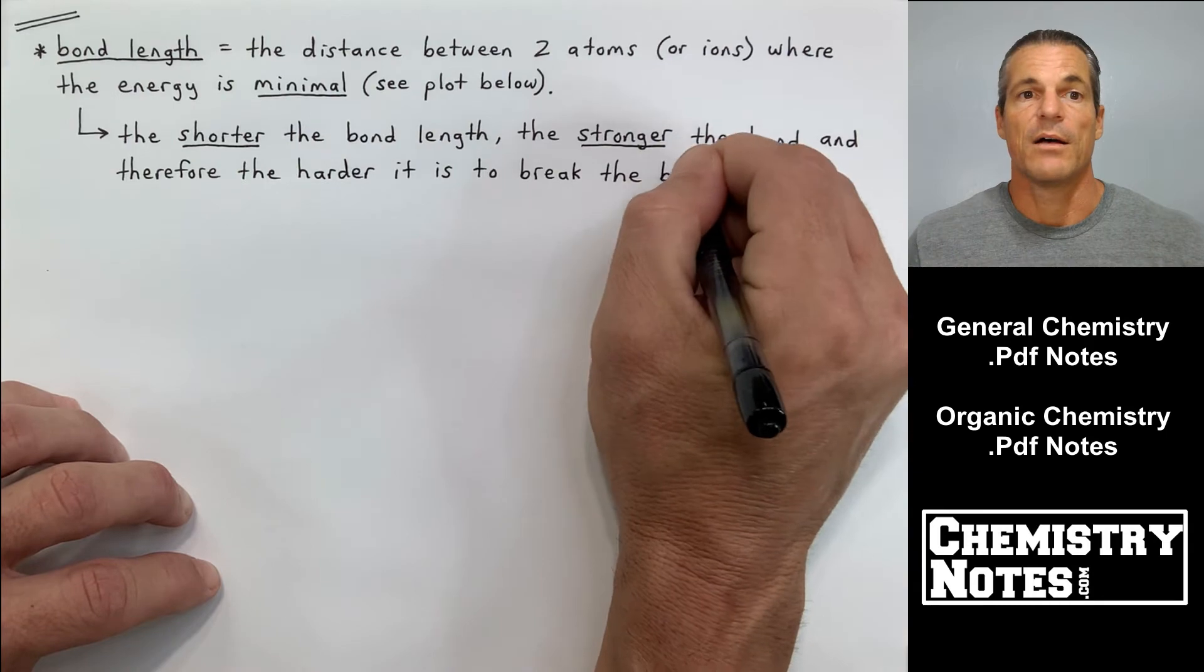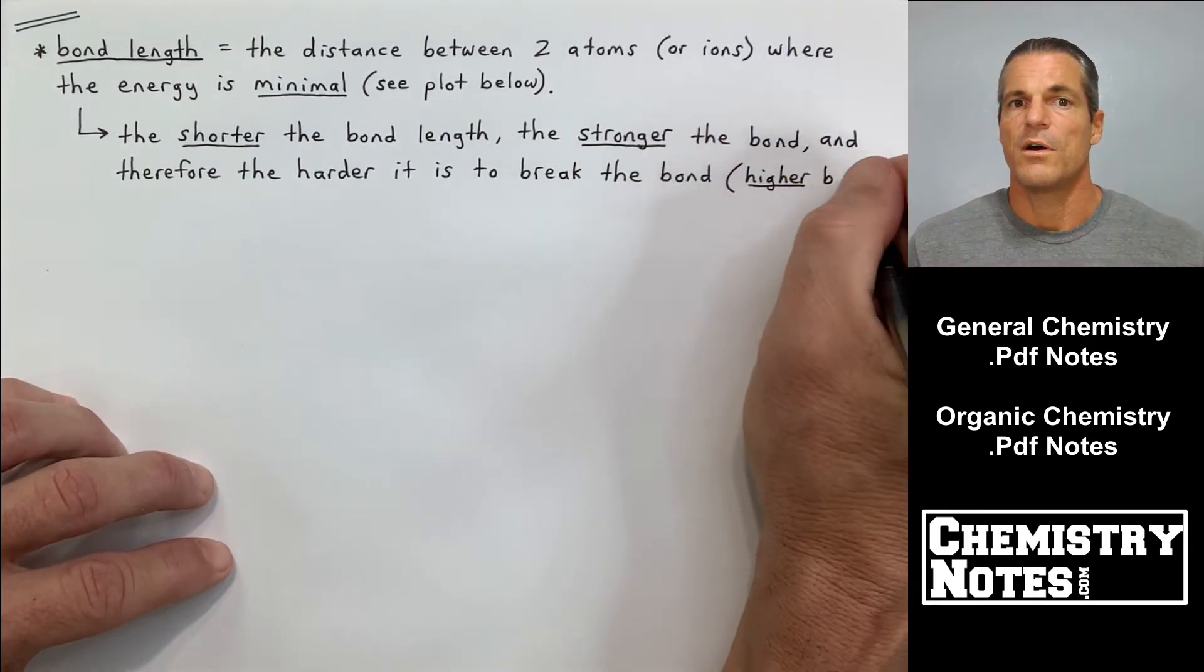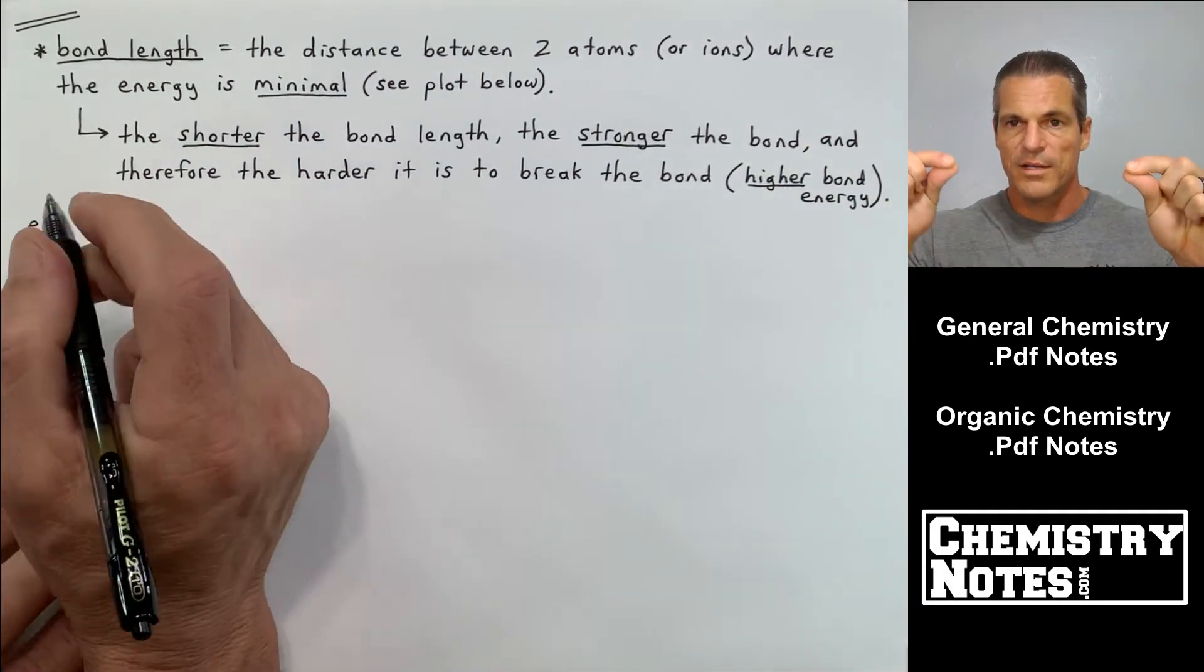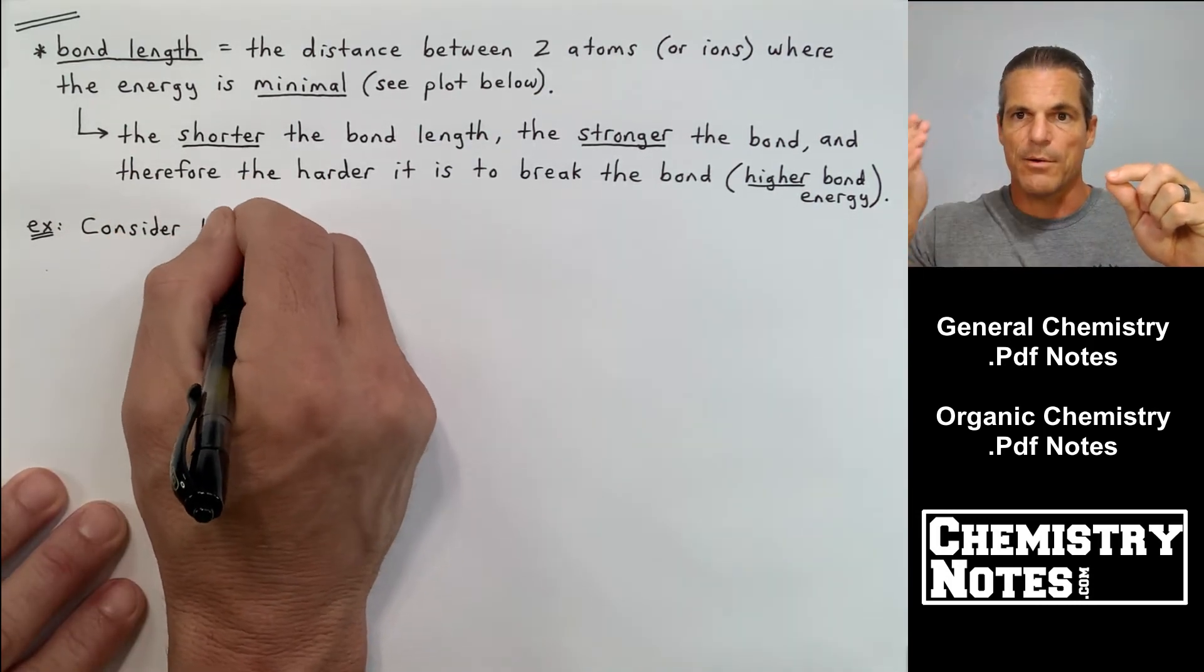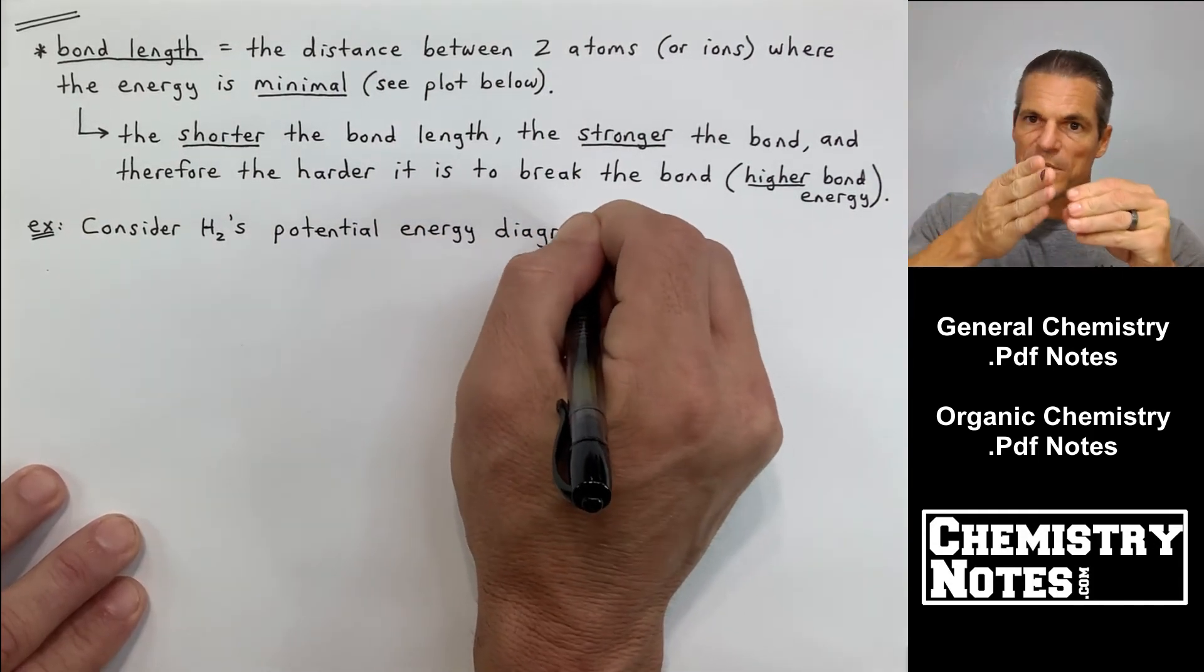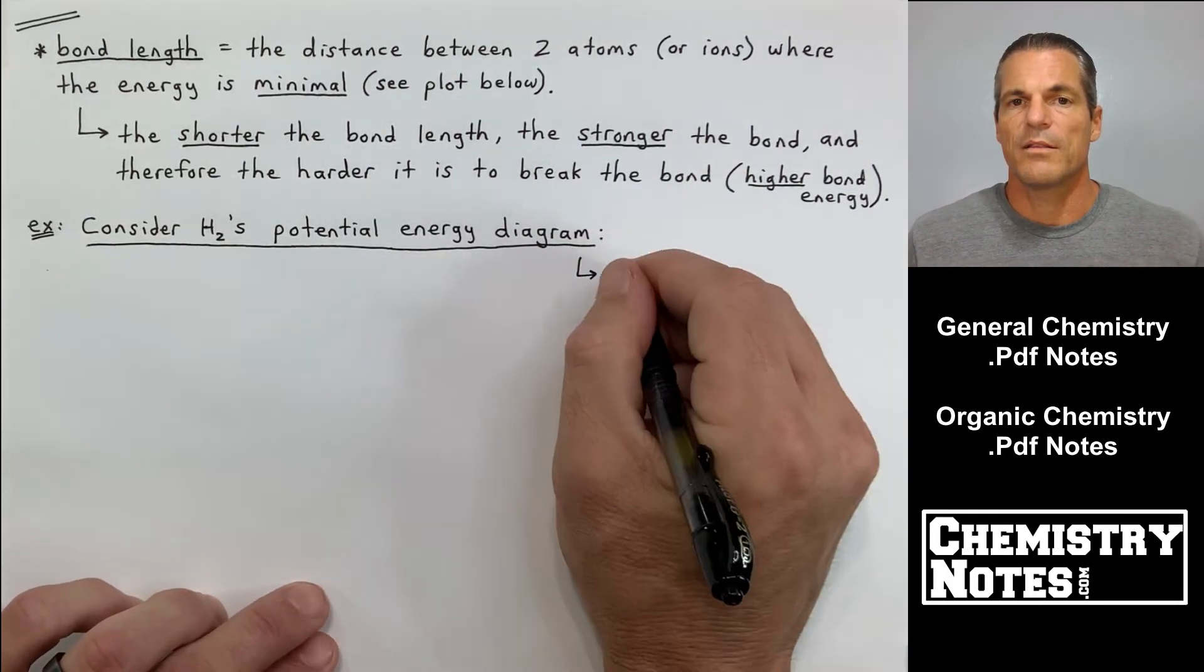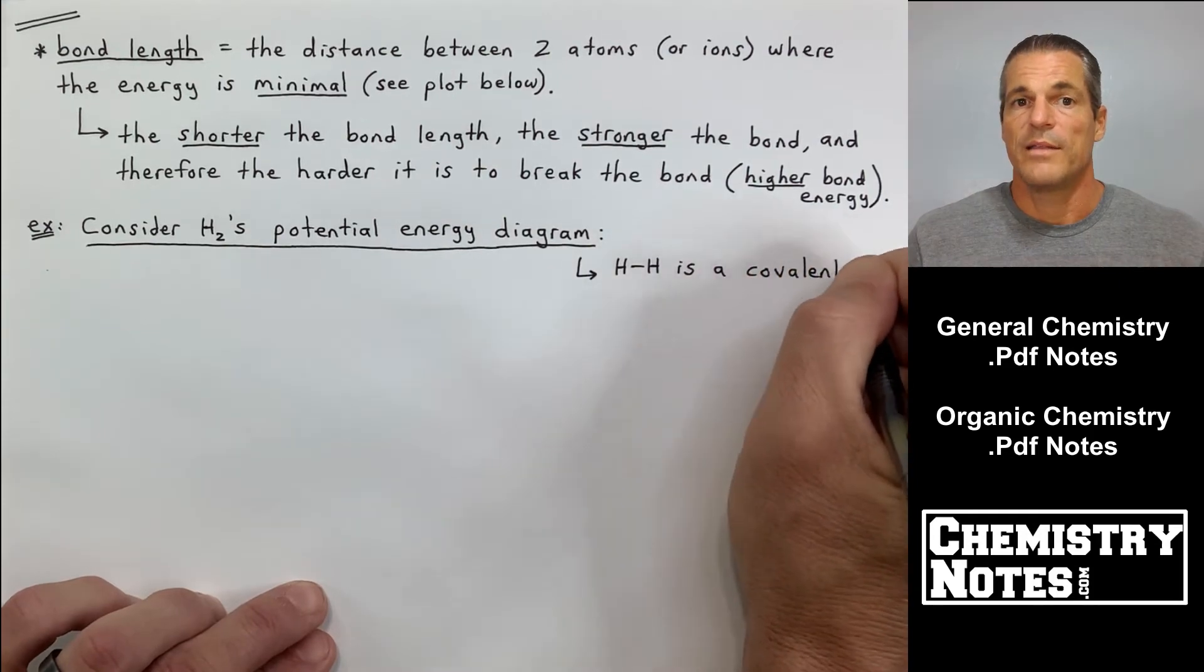The shorter the bond length, the stronger the bond, and therefore the harder it is to break the bond. Think of a long string that's all wobbly—pretty easy to cut or break in half. Whereas if I have a tighter string or even two or three strings, it's much harder to break through. So the shorter the bond length, the stronger the bond.